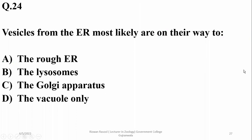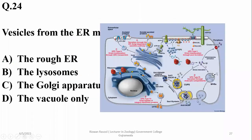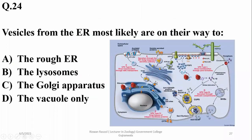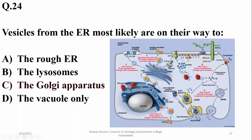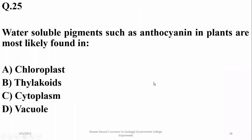Question 24: Vesicles from the endoplasmic reticulum are most likely on their way to the Golgi apparatus. As you can see in the diagram, vesicles ultimately transfer from the ER to the Golgi. Right option is C.